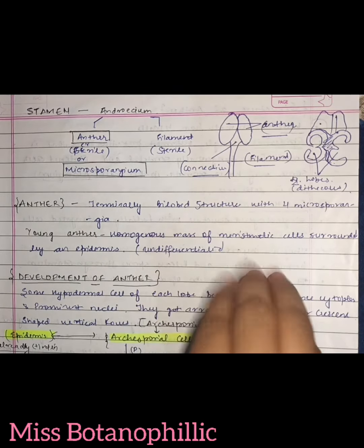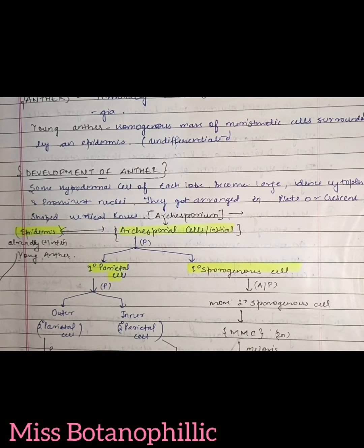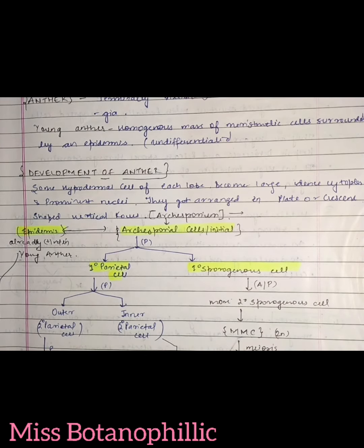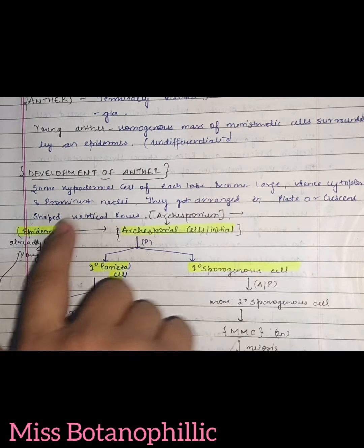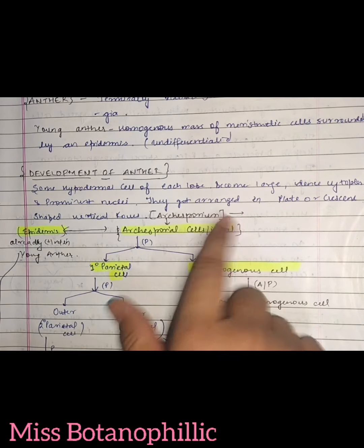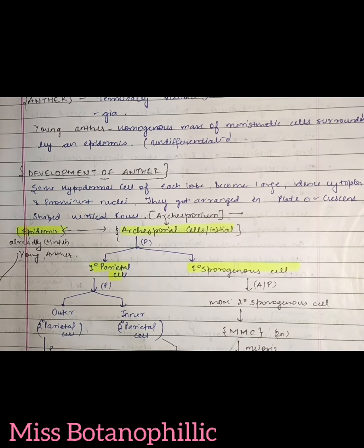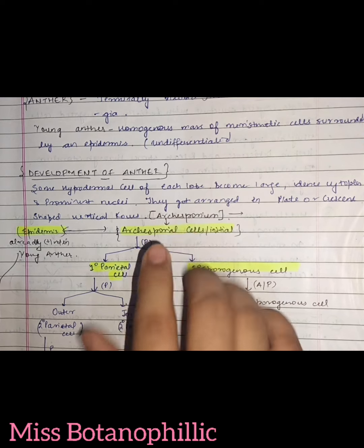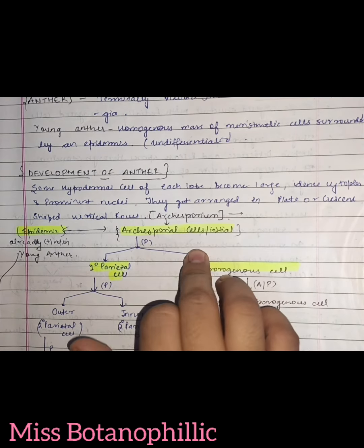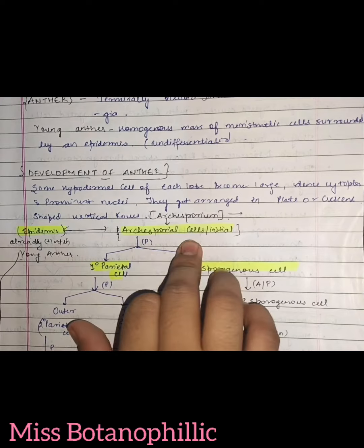So now we are going to study the procedure for the development of the anther. In the development of the anther, first some of the hypodermal cells of each lobe become large with dense cytoplasm and a prominent nucleus. They get arranged in a plate or crescent shape structure. This is called the archesporium. These are called archesporium cells or archesporium initials.